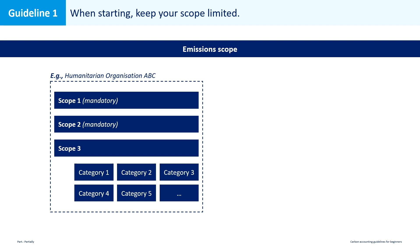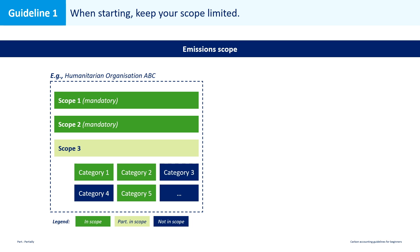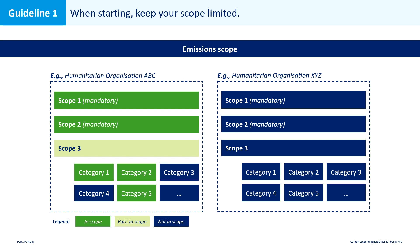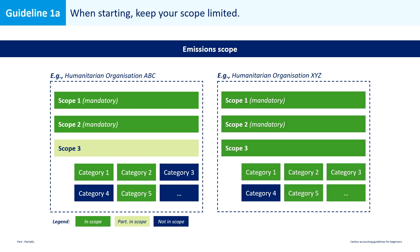Remember, organization ABC was just starting with carbon accounting, so it decides to only look at a few categories of scope 3 emissions — namely categories 1, 2, and 5 — because these are perceived as important in terms of emissions volumes and because data is relatively easy to collect for these categories. Then we have organization XYZ, which has been doing carbon accounting for many years, so it decides to report all scope 3 categories, maybe excluding one or two that are simply not relevant for the organization.